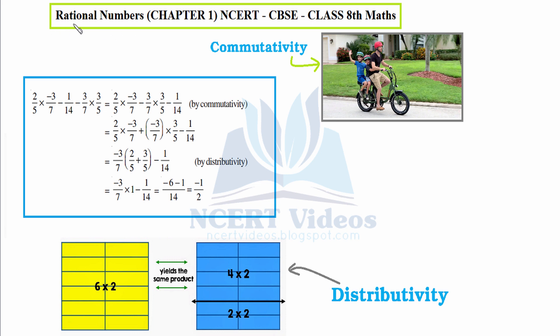Rational numbers. Before solving the exercise, let us revisit the concepts learned in this chapter. We have mainly studied two properties: commutativity and distributivity.